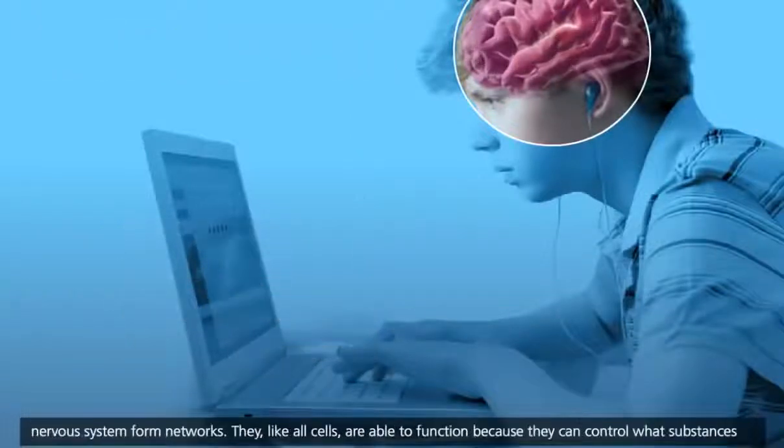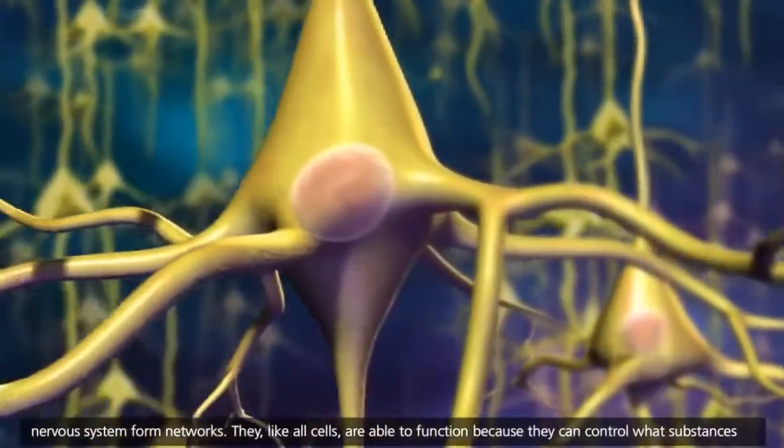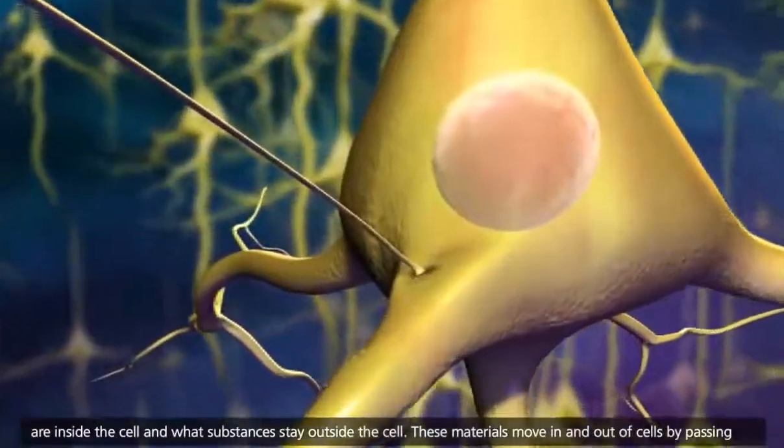The cells of the nervous system form networks. They, like all cells, are able to function because they can control what substances are inside the cell and what substances stay outside the cell.